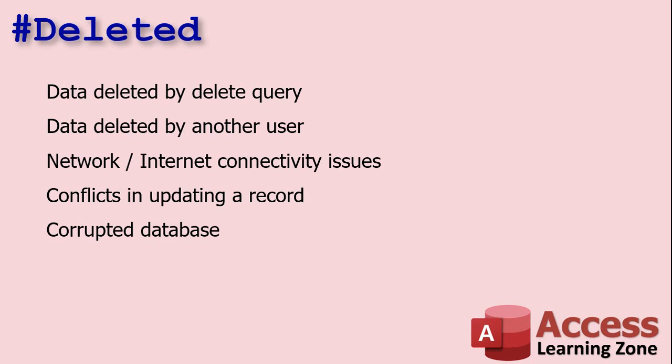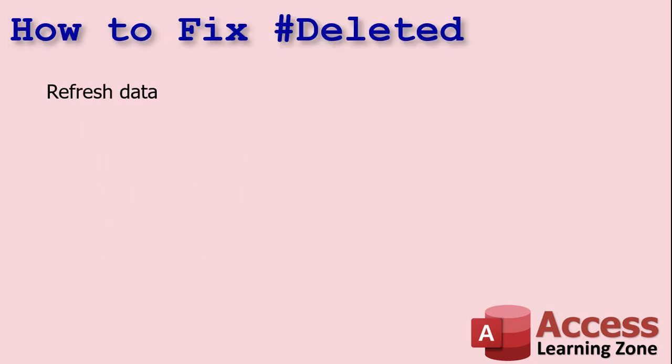A corrupted database can also cause pound deleted when you know the record should be there. Try compact and repair — if that doesn't work you may have bigger problems. Another reason is incompatible data types, which usually comes into play with SQL Server. If you're using a data type Access doesn't support — like BigInt on an older version of Access — you'll see pound deleted because the data confuses Access even though the record is really there.